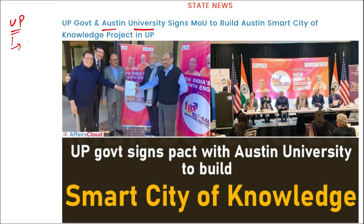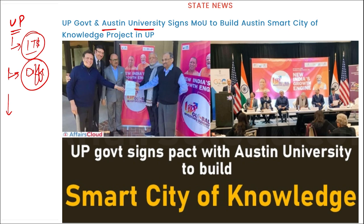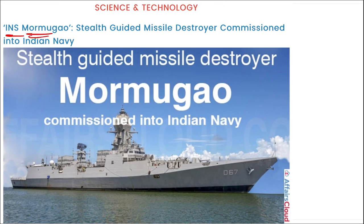The UP government aims to achieve a 1 trillion dollar economy. To support this, different districts in UP will be assigned specific sports for youth participation. UP will also be setting up a smart city of knowledge in collaboration with Austin University. INS Mormugao, the stealth guided missile destroyer, has been commissioned into the Indian Navy.